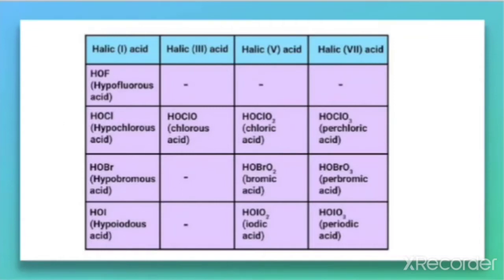These oxoacids can be classified into four types: halic-1 acid, halic-3 acid, halic-5 acid, and halic-7 acid, in which the oxidation states are +1, +3, +5, and +7 respectively. Since fluorine has very little tendency to form oxoacids, it can form only a single oxoacid — hypofluorous acid (HOF). Chlorine, however, can form hypochlorous acid, chlorous acid, chloric acid, and perchloric acid.